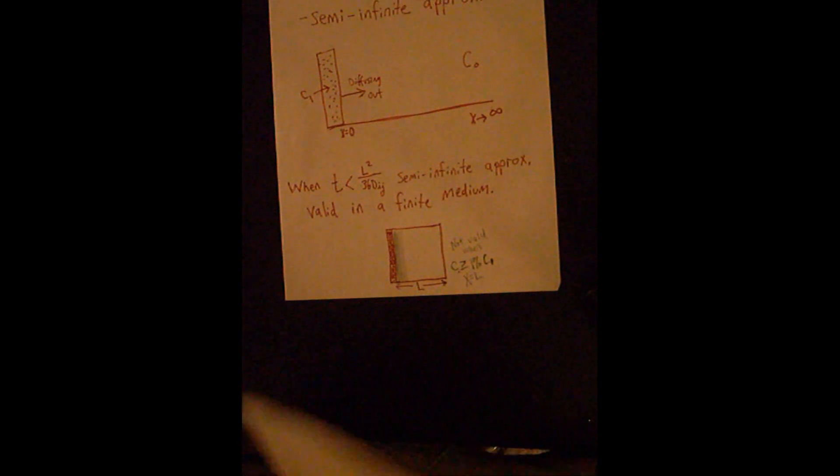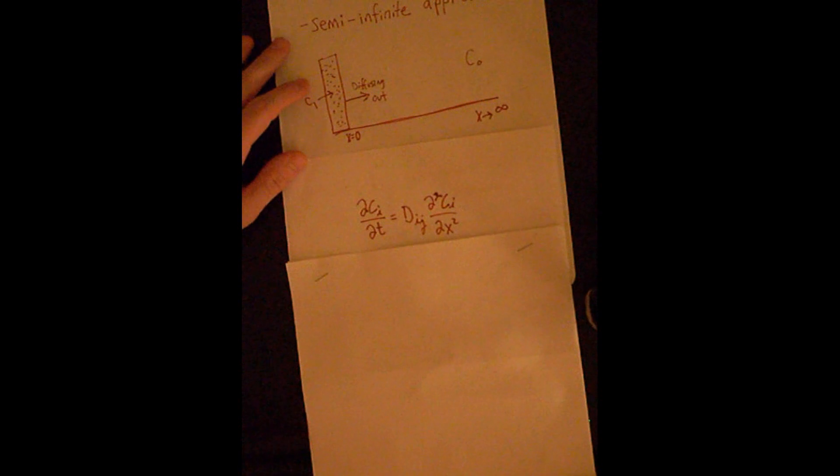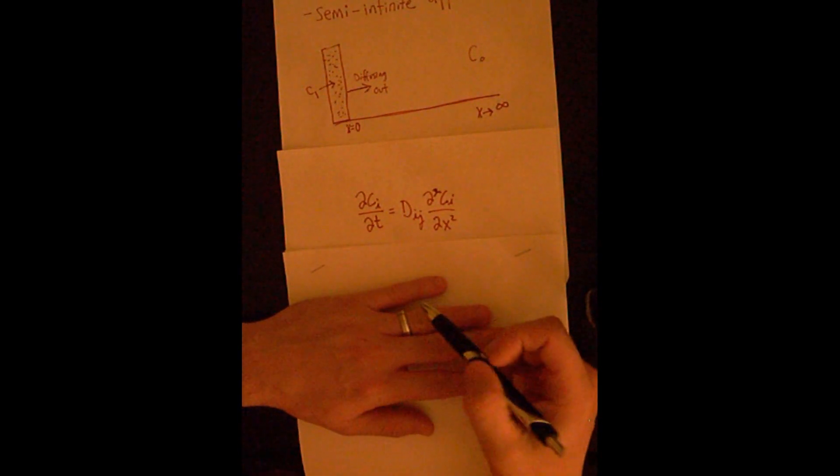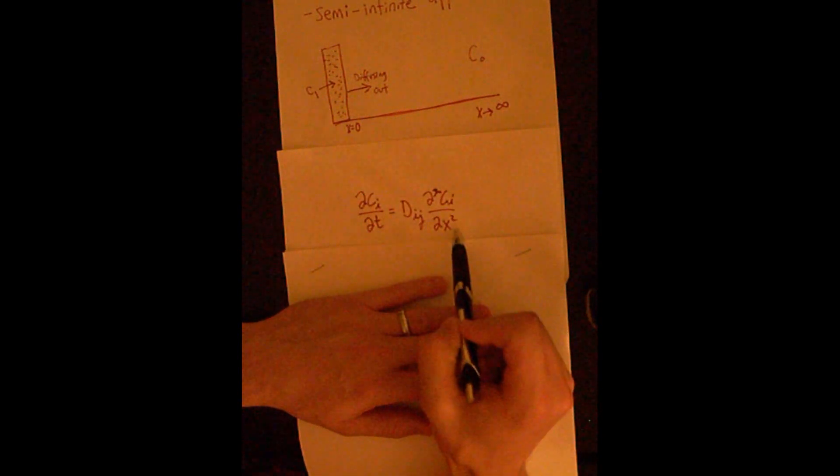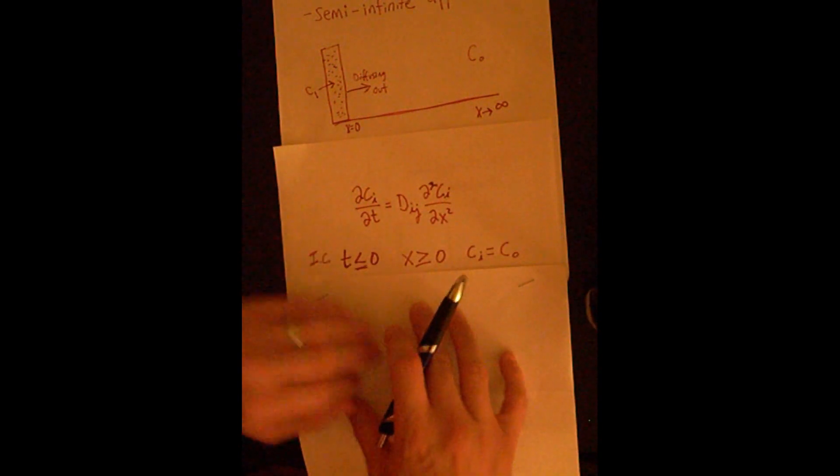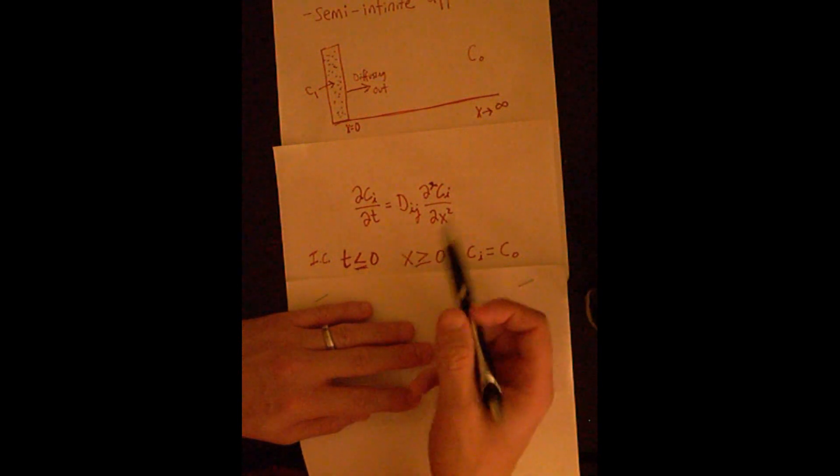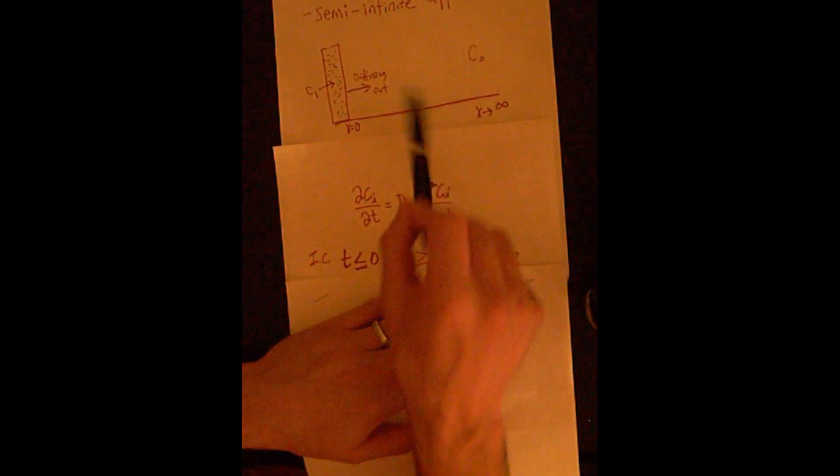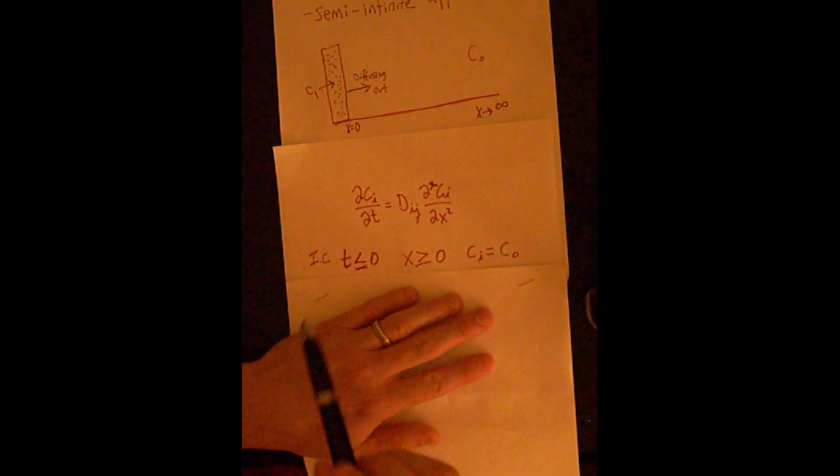So the semi-infinite approximation is governed by Fick's second law. Here we have it in rectangular coordinates. Again, this is a partial differential equation; concentration is dependent on two variables, time and position. For this situation, we can look at the initial condition. Again, time is less than or equal to zero. If x is greater than or equal to zero out here, all the time the concentration is going to be equal to C0, the initial concentration.